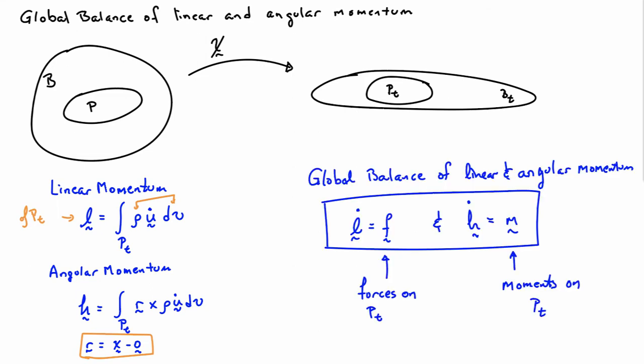The statements of global balance of linear and angular momentum say that the time rate of change of the linear momentum of the part equals the forces that act on the part, and the time rate of change of the angular momentum equals the moments that act on the part. So L dot equals F and H dot equals M. Those are things you can measure in the laboratory.